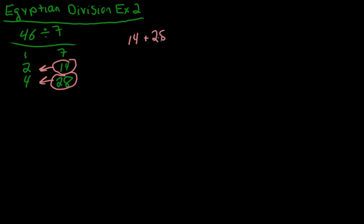14 plus 28 equals 42, which means 7 times 4 plus 2 equals 42. 4 plus 2 is 6, so 7 times 6 equals 42. But we don't want 42. We want to get to 46.